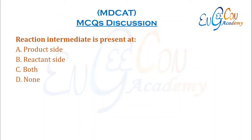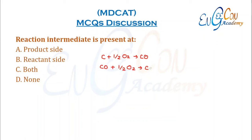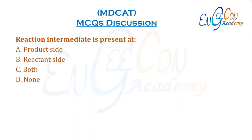Reaction intermediate is present at which position? Suppose we have a reaction: carbon + ½O2 forms carbon monoxide, then carbon monoxide reacts with ½O2 to give carbon dioxide. Carbon monoxide is the intermediate — it is present as a product in the first step and as a reactant in the second step, so it can be present on both sides.